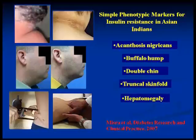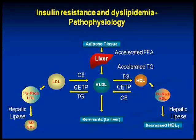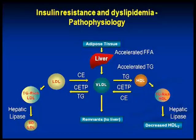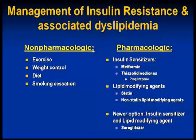Insulin resistance and dyslipidemia: if you consider the pathophysiology in insulin resistance, we have accelerated free fatty acids as well as triglyceride production. And we have increased small dense atherogenic LDL. So this is what we are trying to improve.